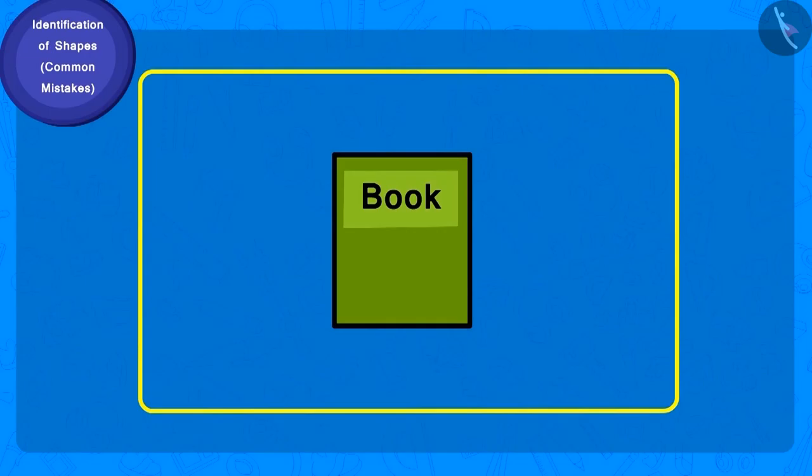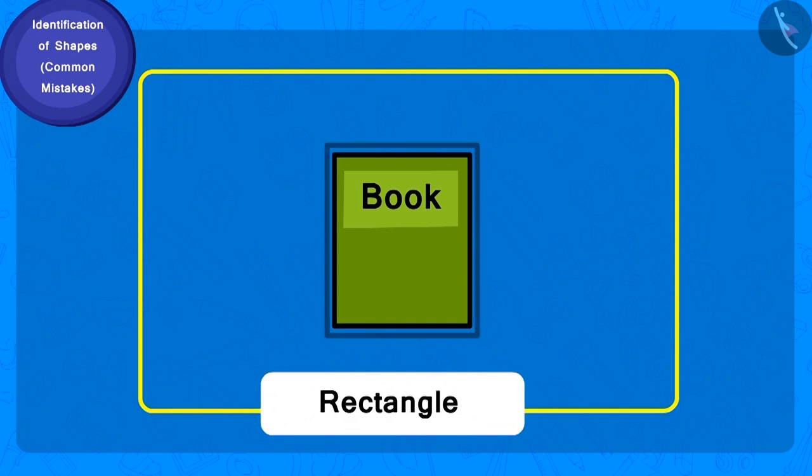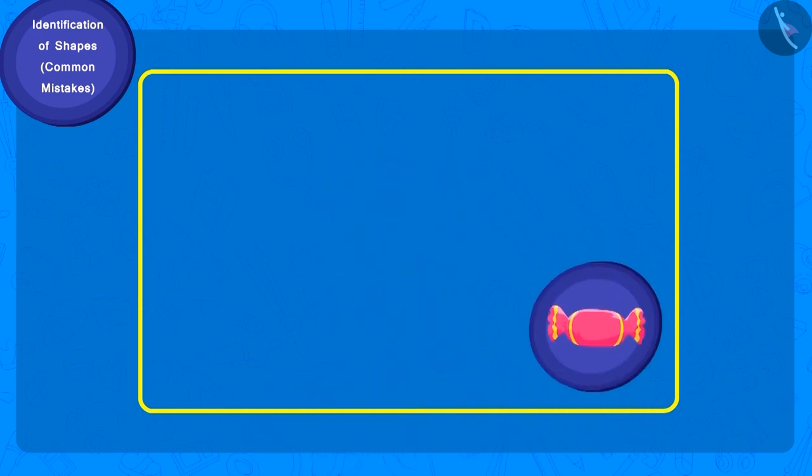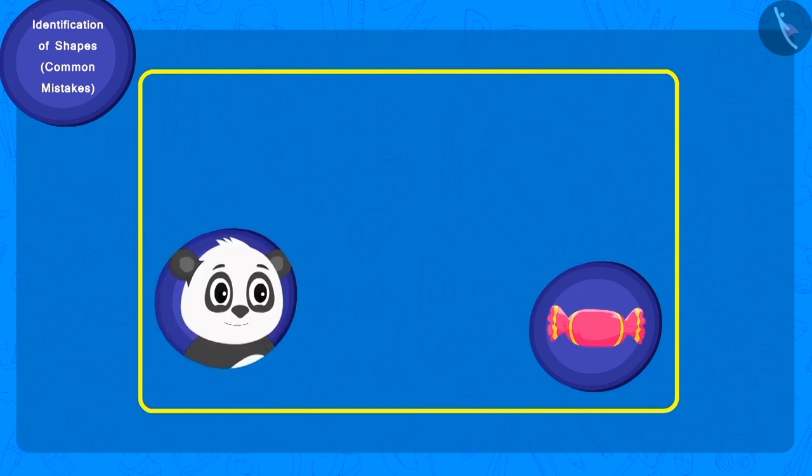Only the length of the opposite sides is the same. So, what shape is the book? The shape is rectangle. So, who will get the toffee? Golu.